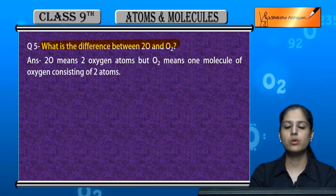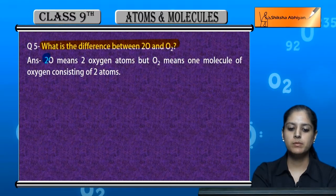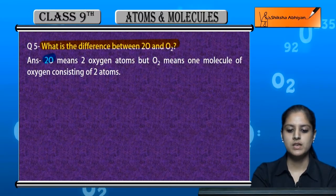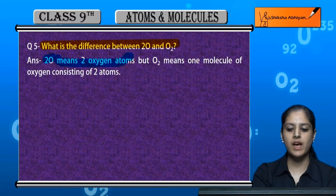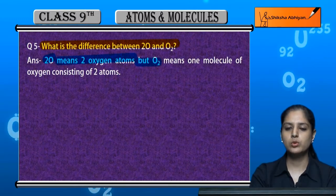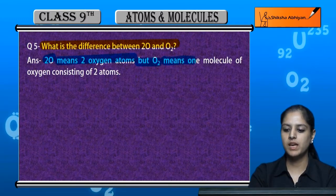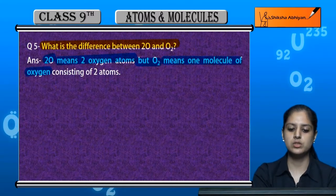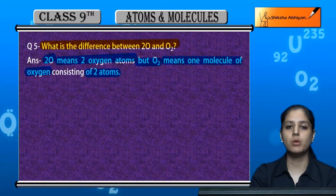When we talk about 2O, it means 2 oxygen atoms that are separate. But when we talk about O2, it means one molecule of oxygen, which means 2 oxygen atoms are chemically bound.